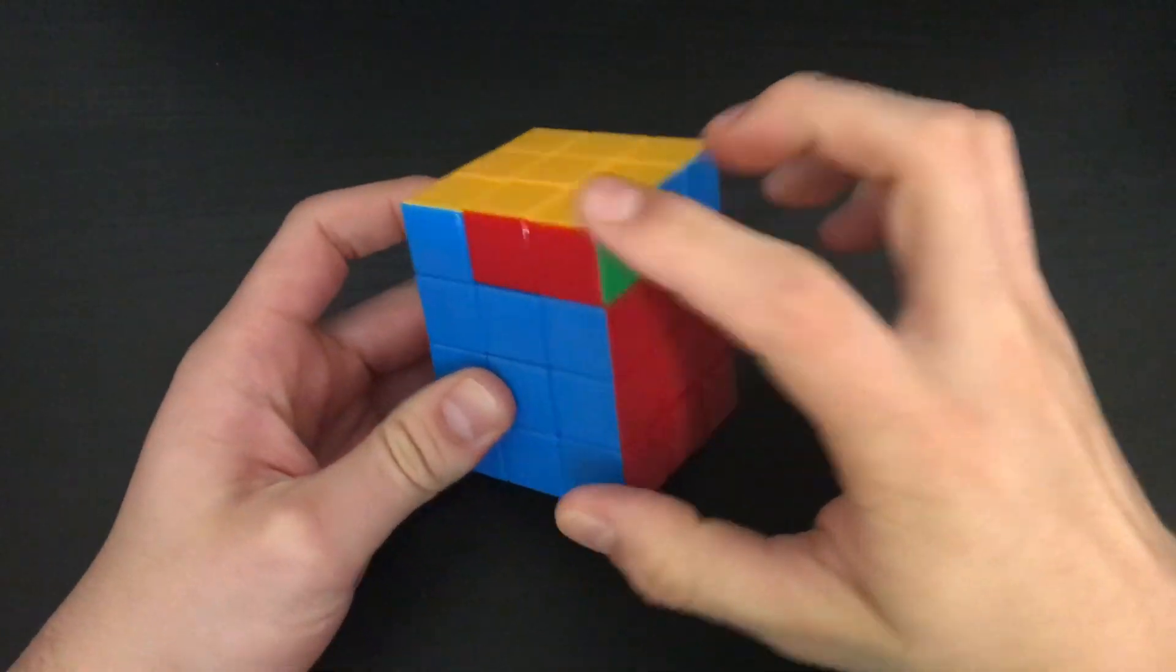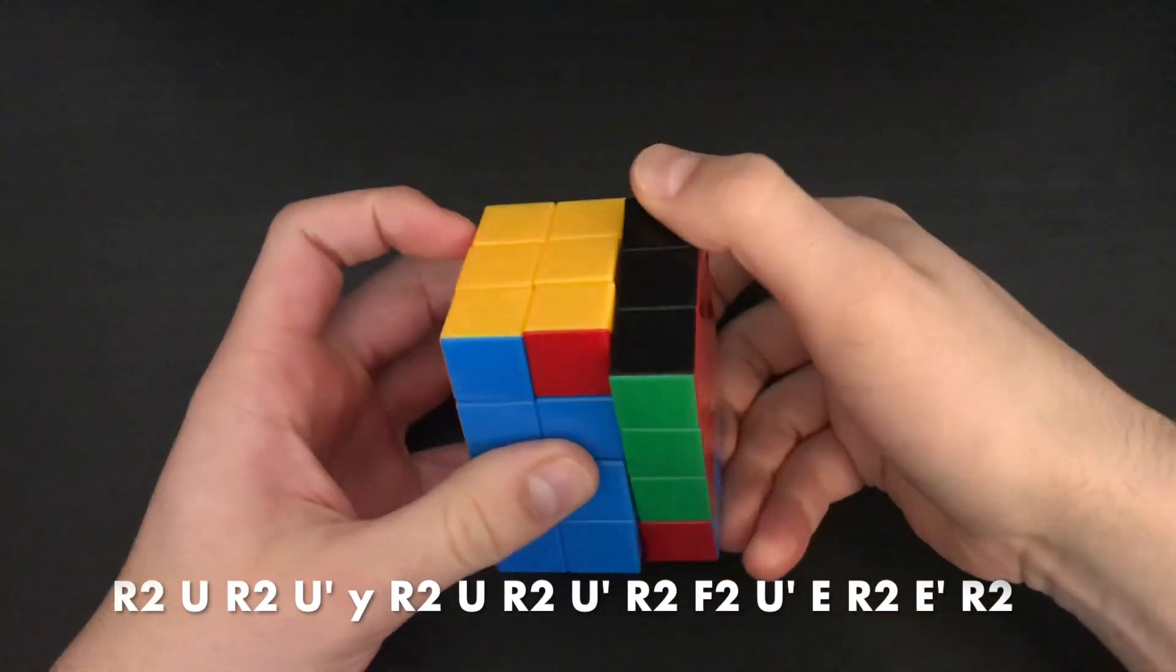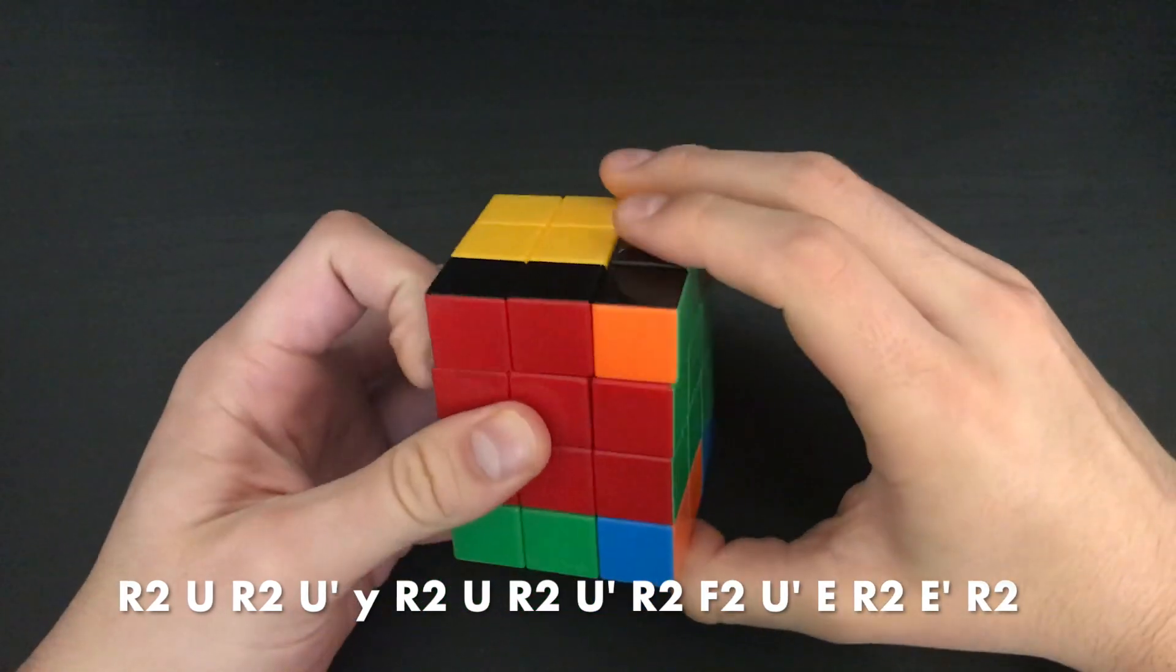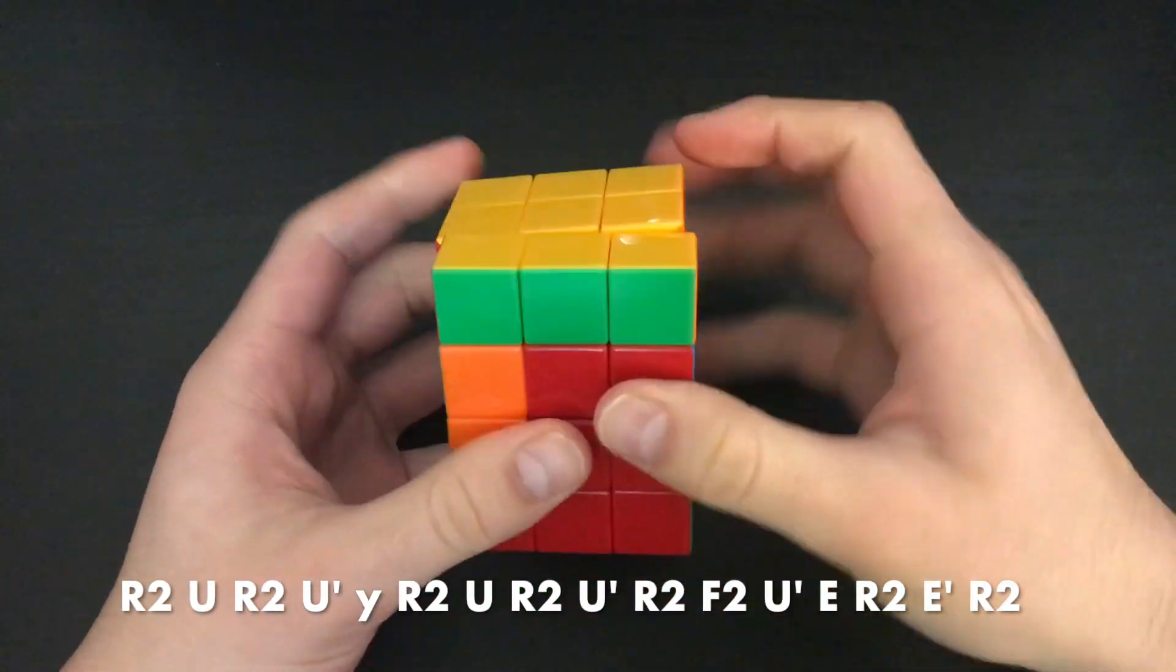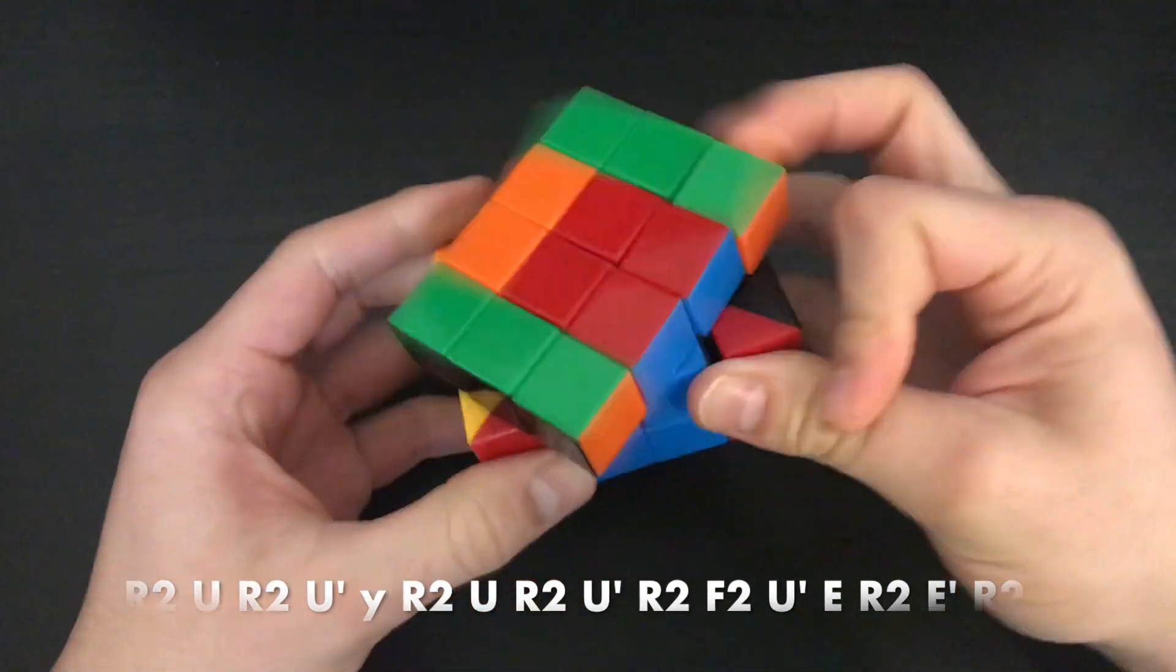If two edges and two corners are swapped, you can use this alg: R2u, R2u', Y, R2u, R2u', R2u', R2, F2, U', and then do a four mover to solve the wings.